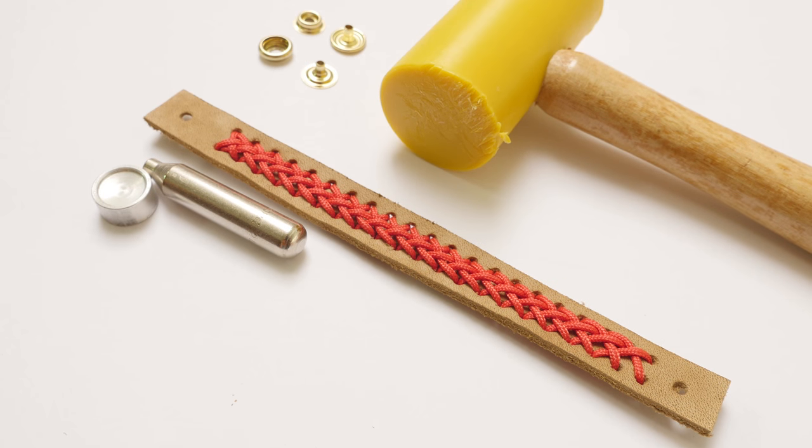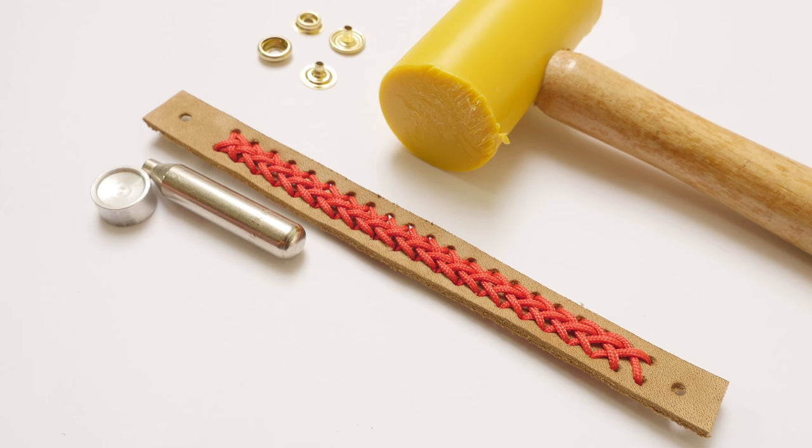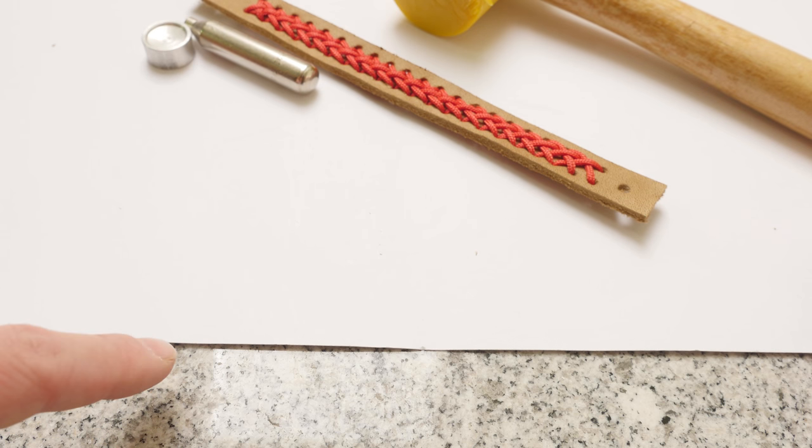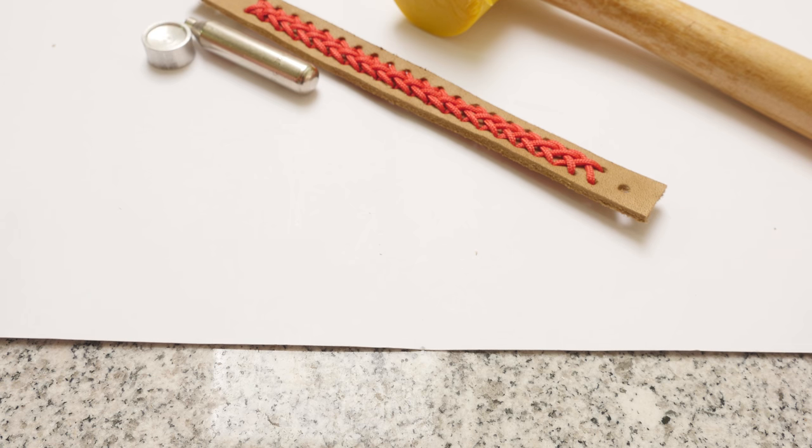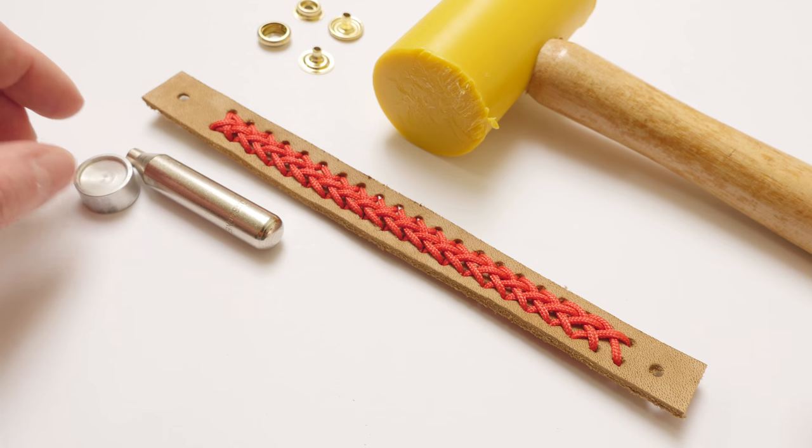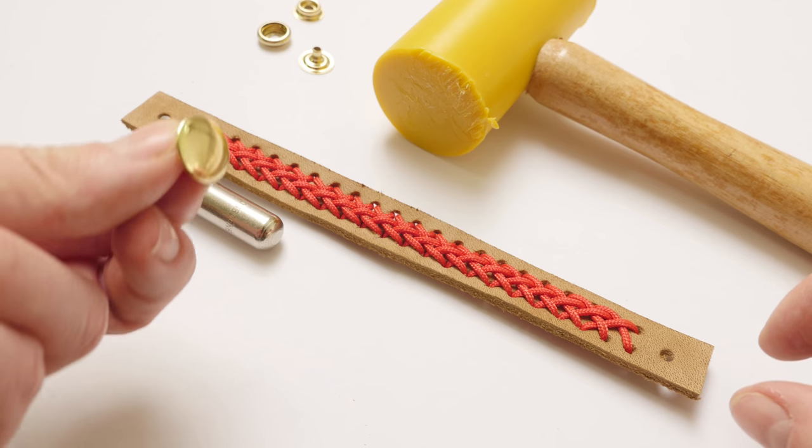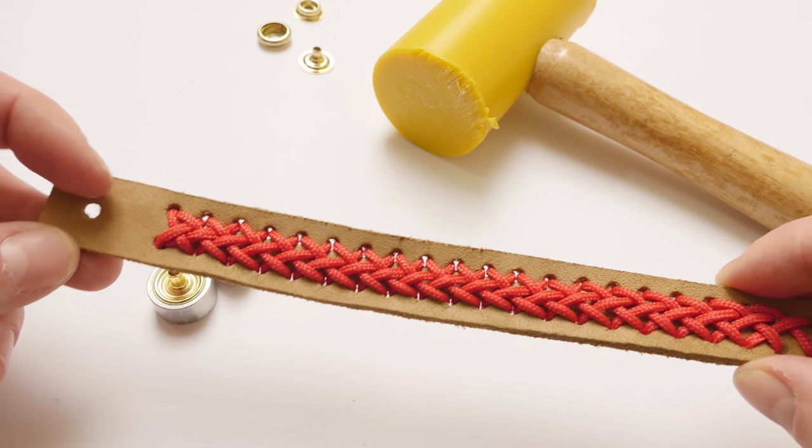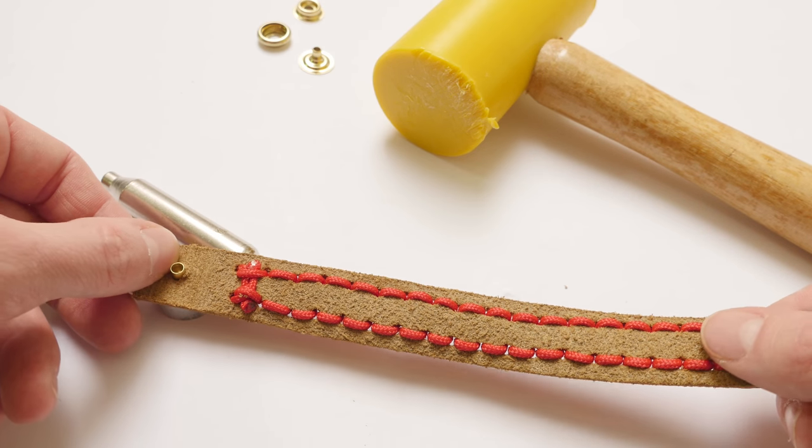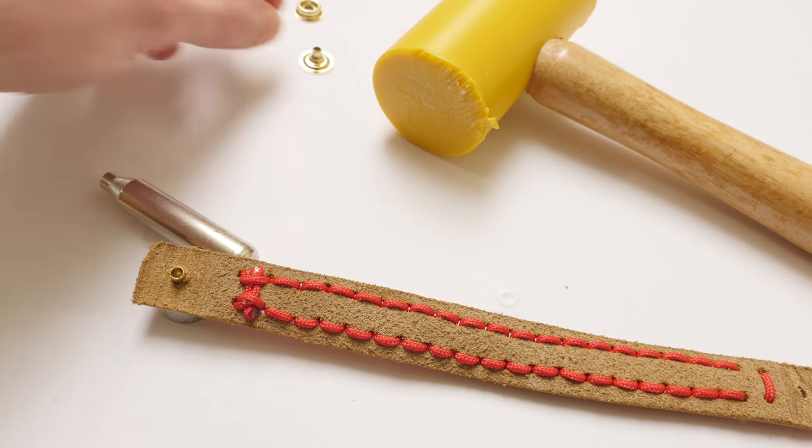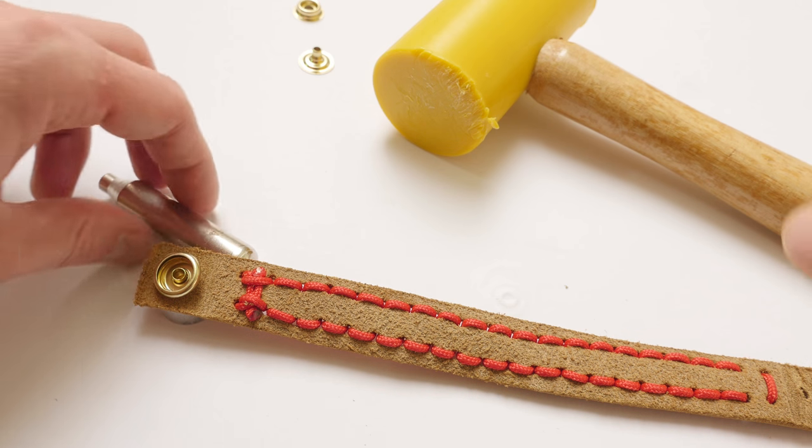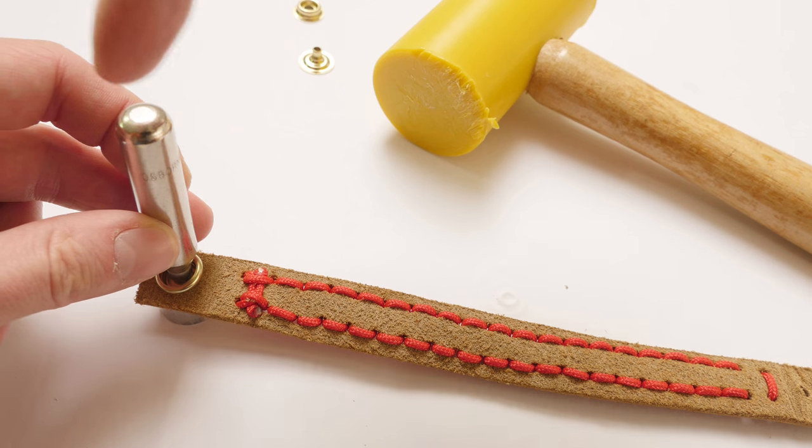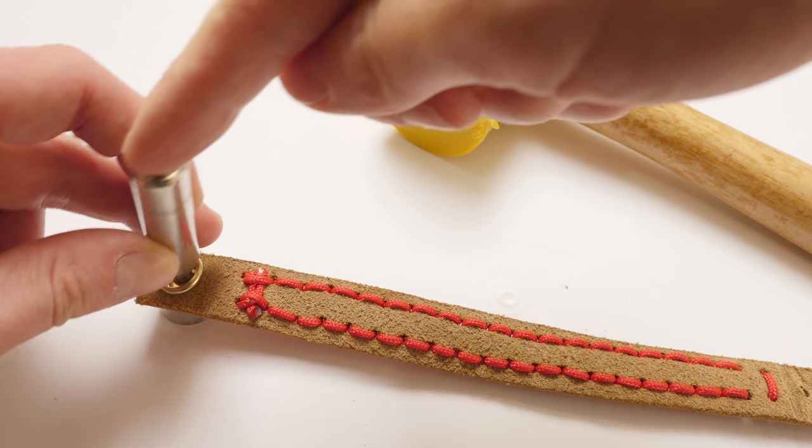For setting your snap, you're going to need a few supplies. So here we have an anvil and a snap setter. We have four parts for our snap, a hammer, as well as a hard surface. I'm using a marble slab, and a hard surface is really important when setting a snap. Now we're going to start by placing one part, which is going to be the cap, into our anvil. And then we're going to place our leather strap skin side down. And then we're going to use the socket on top. We're going to hit inside of our snap first a few times down, and then in a circular motion just to space out the snap evenly.